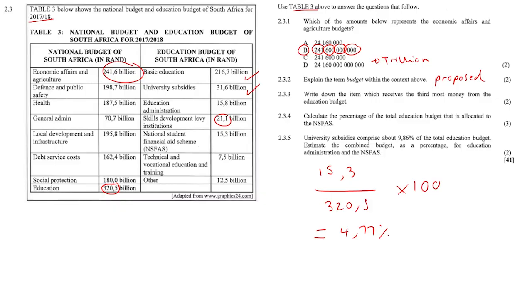Question 2.3.5: university subsidies comprise about 9.86% of the total education budget. Estimate the combined budget as a percentage for education administration and NSFAS. Education administration plus NSFAS is 15.8 plus 15.3 = 31.1 billion. Since 31.6 billion is 9.86%, and 31.1 is slightly smaller, the combined percentage is approximately 9.7%.